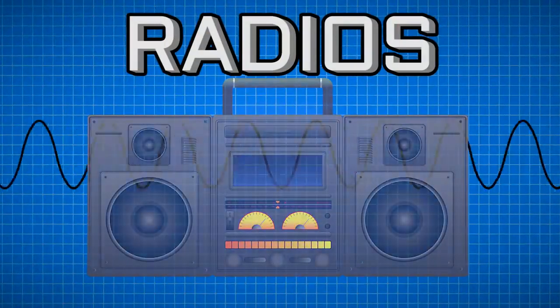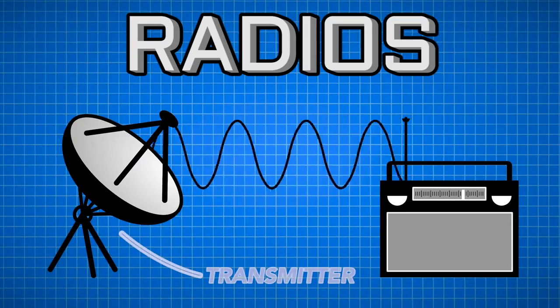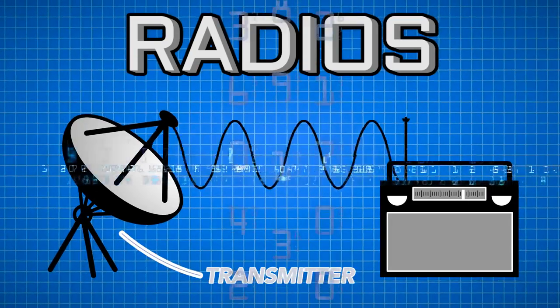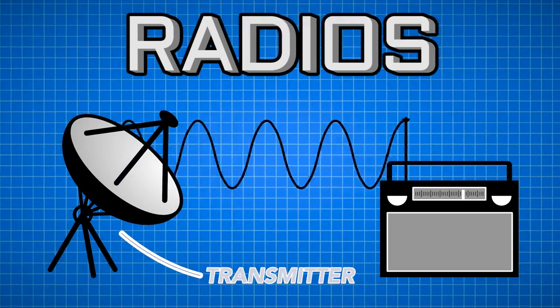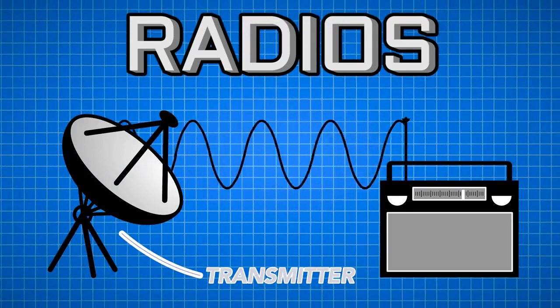Every single radio has two parts, a transmitter and a receiver. The transmitter is responsible for taking a string of data and encoding it to a sine wave. After that encoding happens, it can also be amplified and sent out across the air.